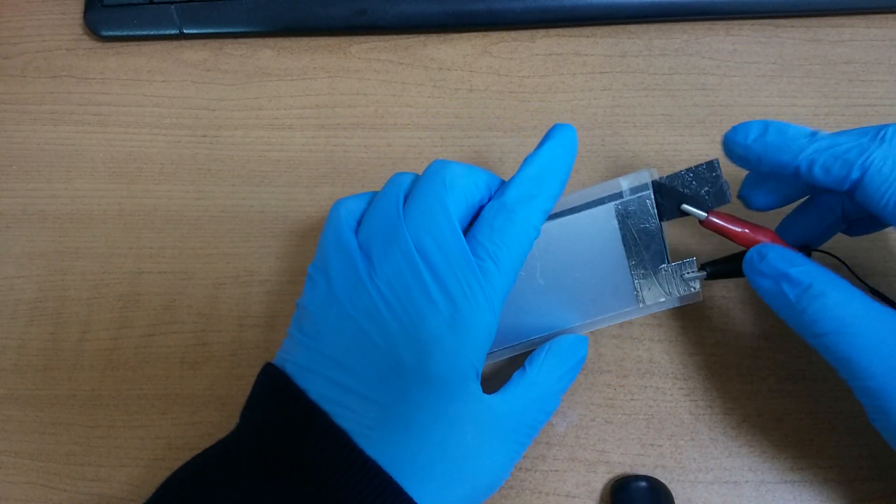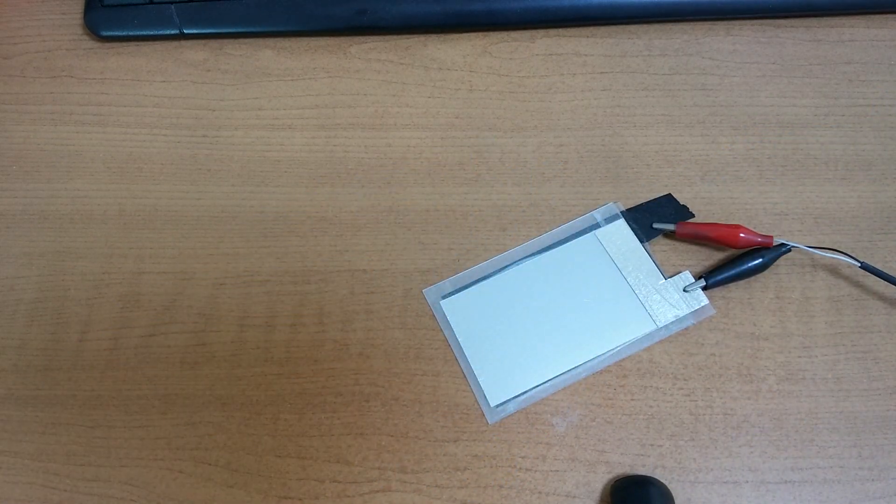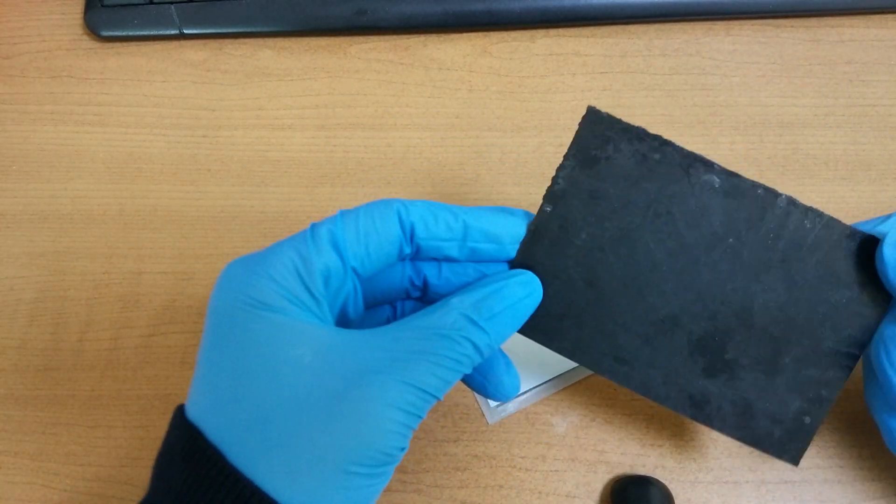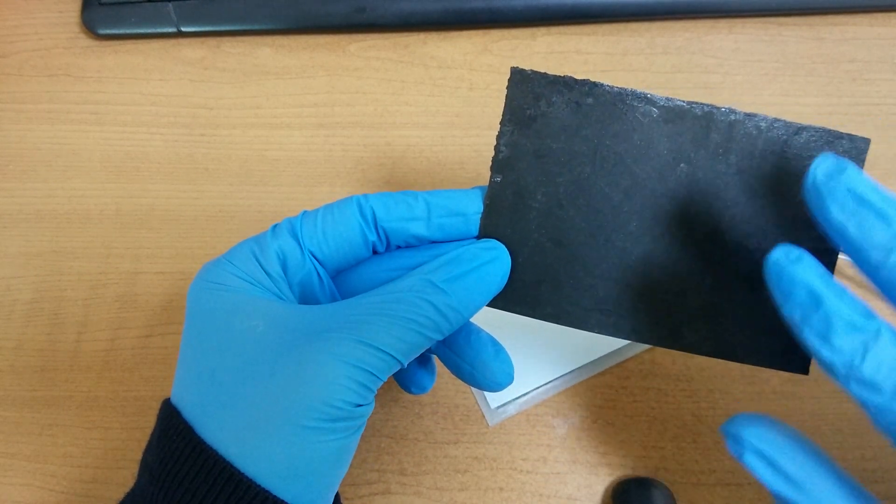For the anode, I used graphene, graphite, and active carbon. This one. This is a paper—graphene, graphite, and active carbon.